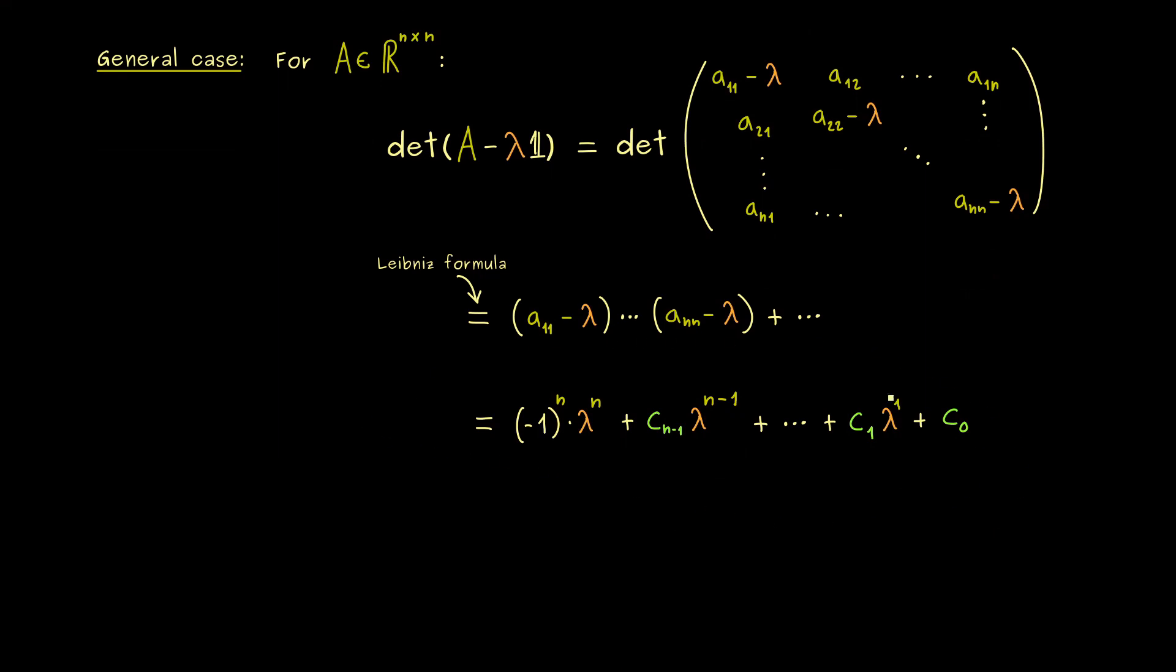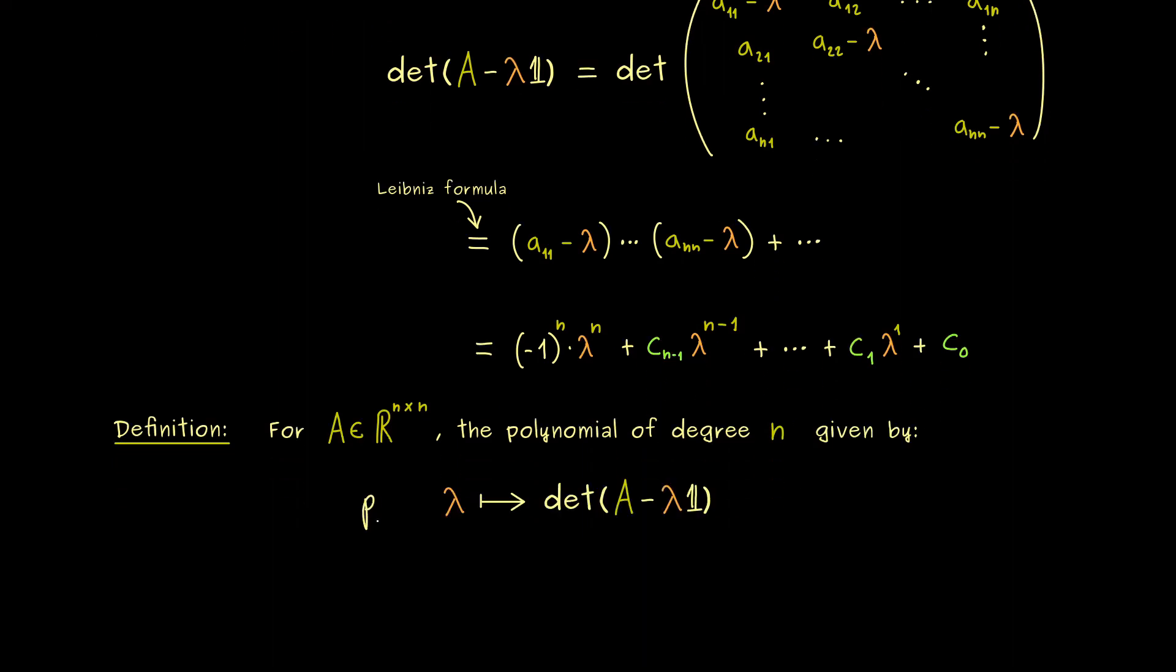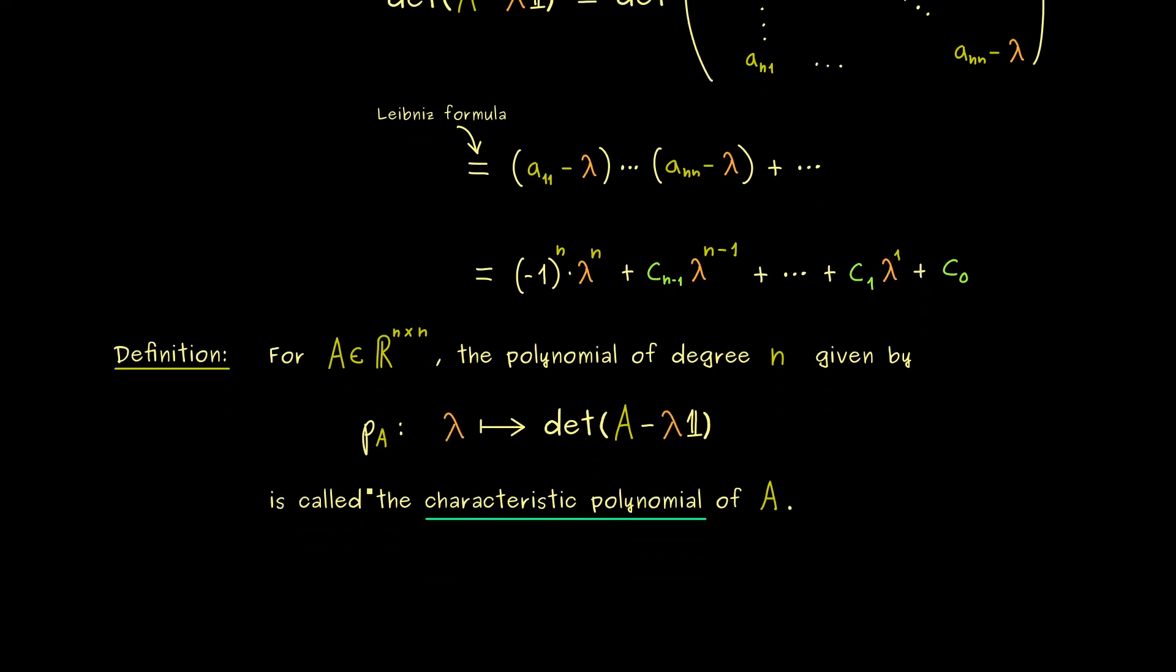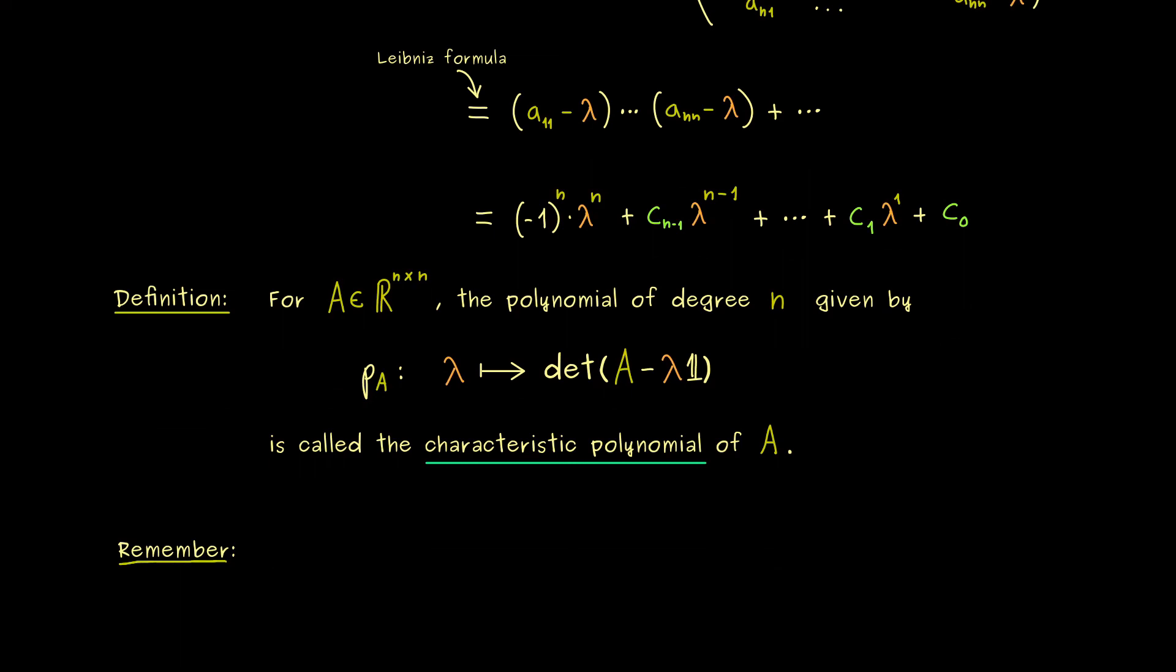And then the only problem for the eigenvalues is that we have to find the zeros of this polynomial. However, before we do higher dimensional examples, we first should put this into a definition. So for a general square matrix A, the polynomial of the degree n given by the formula above is called P_A. And the definition says the variable λ is sent to the determinant A minus λ identity matrix. And in general, we call this map the characteristic polynomial of the square matrix A. So you should remember, this polynomial carries some information of the matrix A. Namely, it carries the information of the eigenvalues. So I would say, this is the takeaway message of this video. The zeros of the characteristic polynomial are exactly the eigenvalues of our matrix A. This means now we have a method for finding all the eigenvalues of a given matrix A.